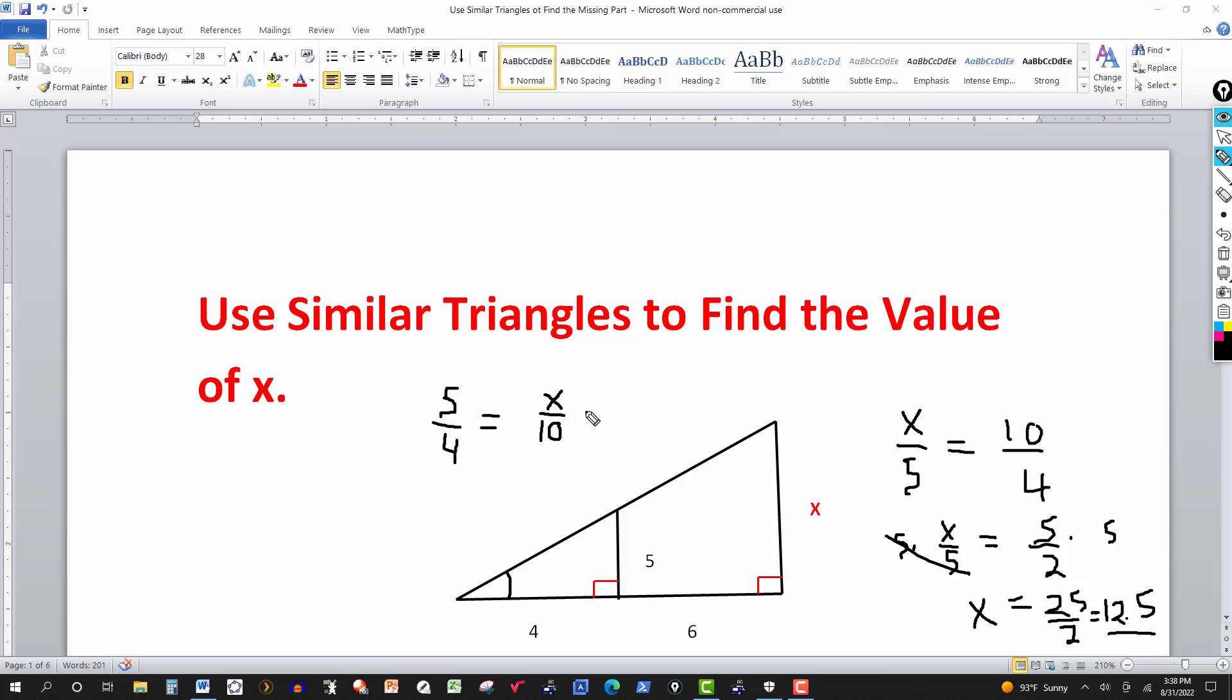So I get five over four is equal to x over ten. Looks a little bit different, but if you multiply by ten here, these cancel out. And here you get five times ten is fifty over four. You can reduce that by two, you get 25 over two, which is the same thing we got over here. So you get the same answer, comes out to 25 over 2 or 12.5.